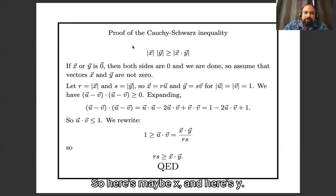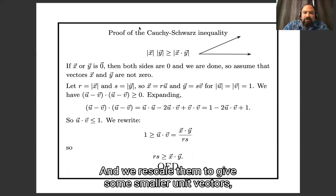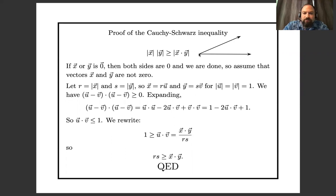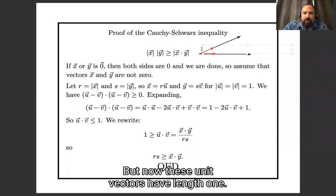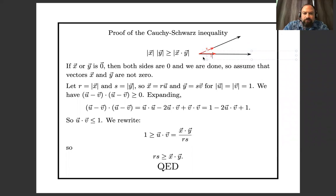So here's maybe x and here's y and we rescale them to give some smaller unit vectors u and v which point in the same direction, but now these unit vectors have length 1. x has length r, y has length s, u has length 1, v has length 1.